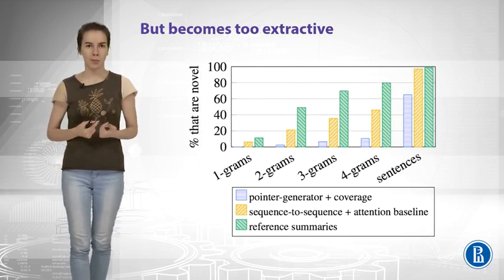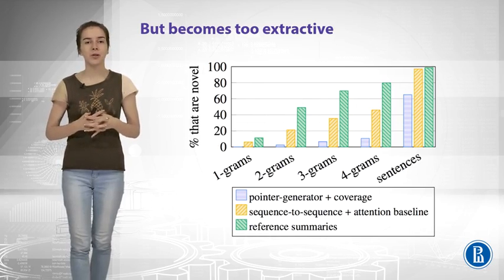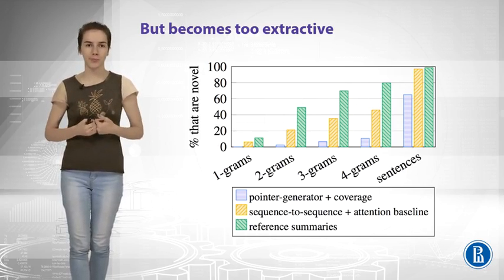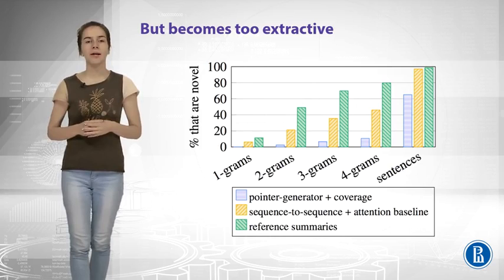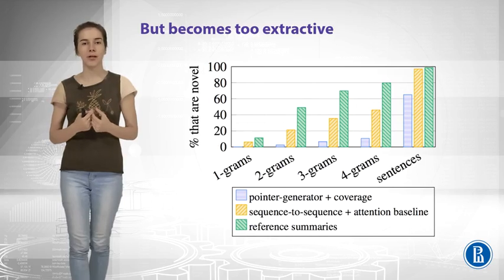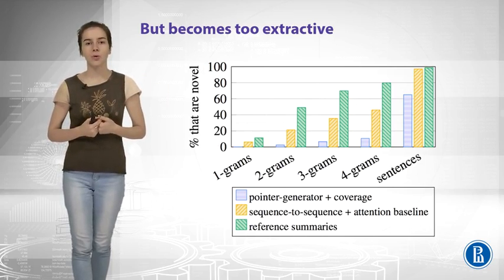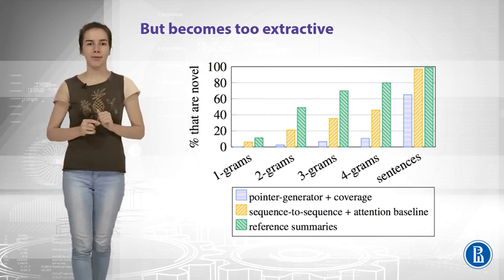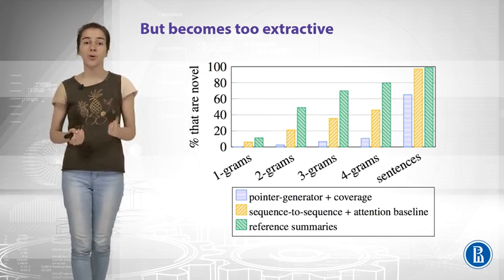However, we have another problem. The summary becomes really extractive, which means we do not generate new sentences — we just extract them from our input. We can compare what we have with reference summaries by computing the ratio of n-grams that are novel. For reference summaries, there are rather high bars for all of them. The model with coverage mechanism has sufficiently lower levels of novel n-grams than the model without coverage. So in this case, coverage spoils the model a little bit.